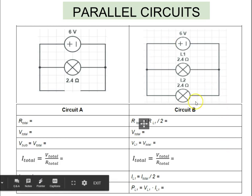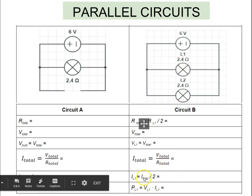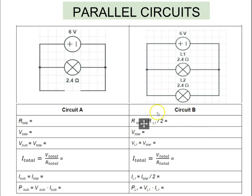The total current through the system is 5 amps. Now the current through each light bulb is half of that, because the current splits equally between the two parallel branches. So the current through one light bulb equals the total current divided by 2: 5 divided by 2. You now have all the information to calculate the power of each light bulb.